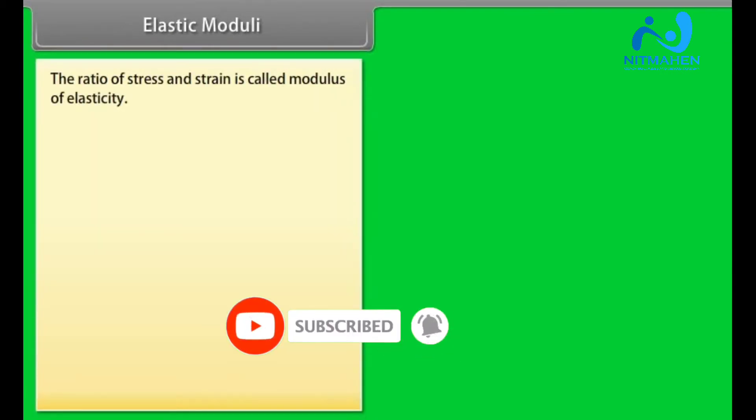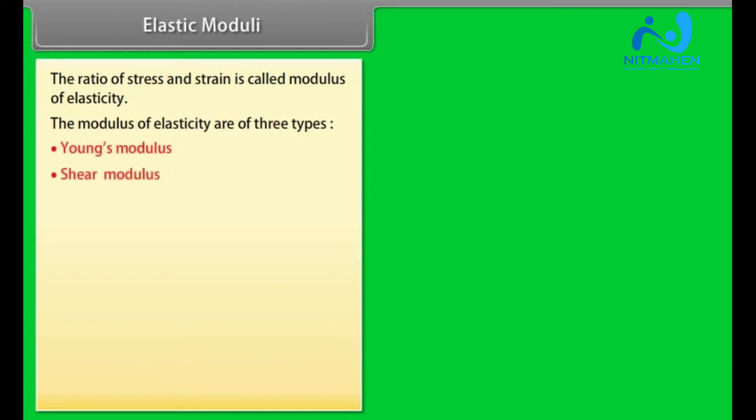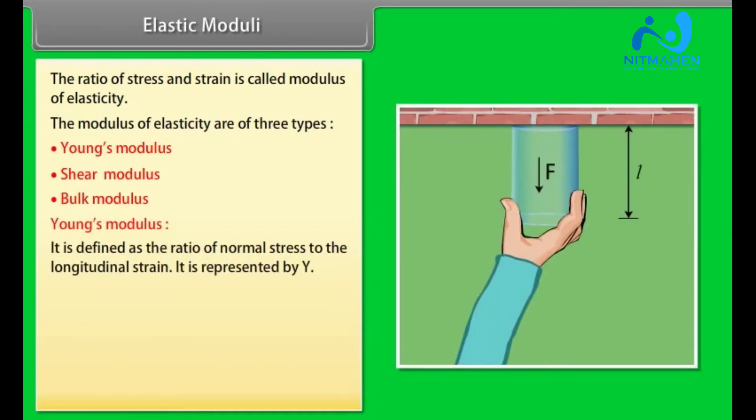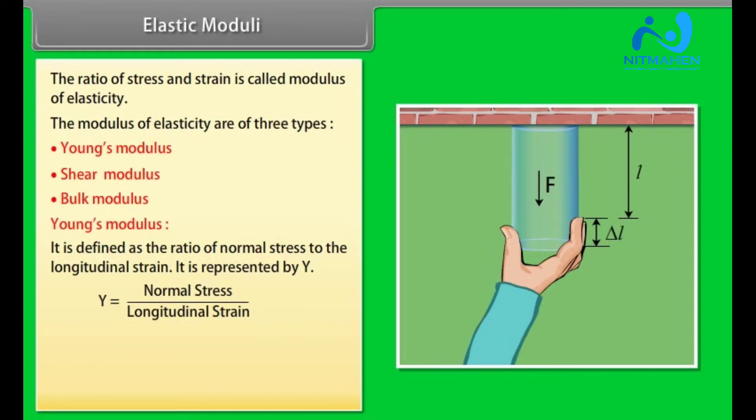Elastic moduli. The ratio of stress and strain is called modulus of elasticity. The modulus of elasticity are of three types: Young's modulus, shear modulus, and bulk modulus. Young's modulus is defined as the ratio of normal stress to the longitudinal strain. It is represented by Y. Y is equal to normal stress upon longitudinal strain, equal to F times L divided by A times ΔL, where F is the external normal force, ΔL is change in length, and L is original length.